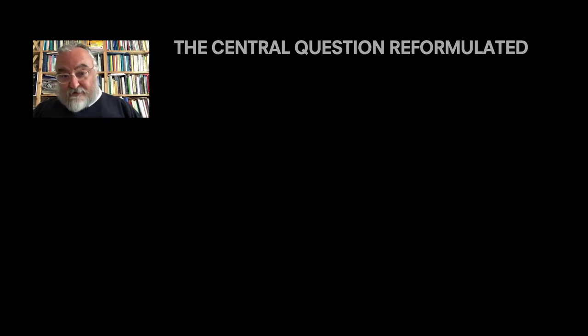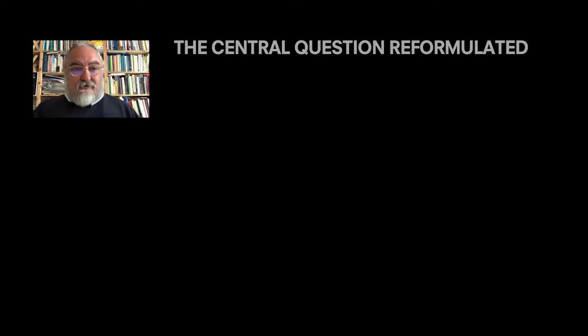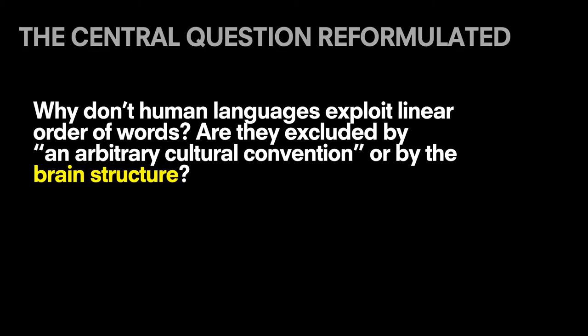In other words, syntactic rules ignore linear order or flat rules — they only see boxes. If this is true, and this is true, we can actually reformulate the central question in a more sophisticated way. Why don't human languages exploit the linear order of words? Are they excluded by an arbitrary cultural convention or by brain structure? How can we prove that?